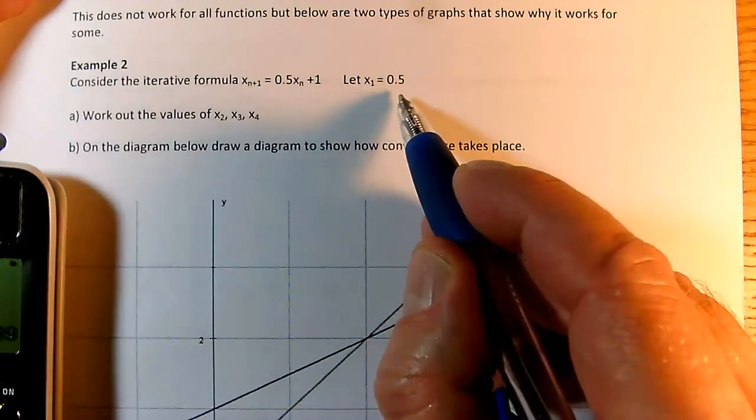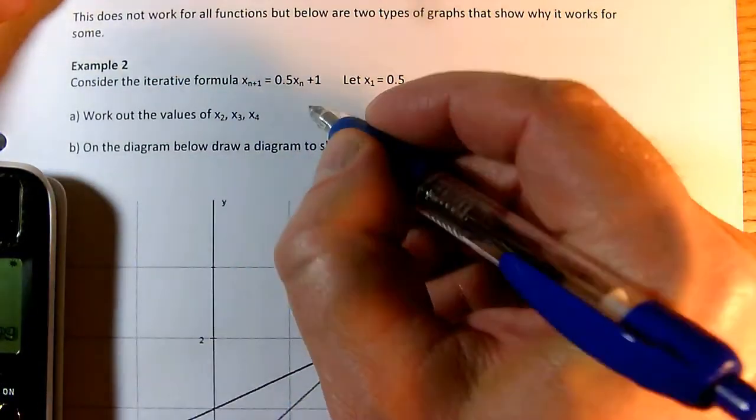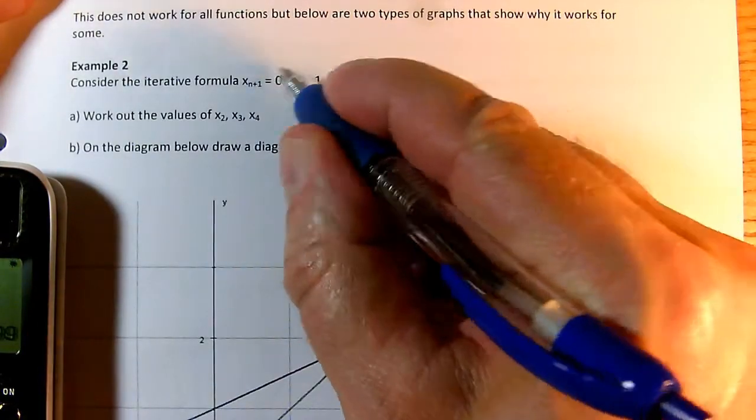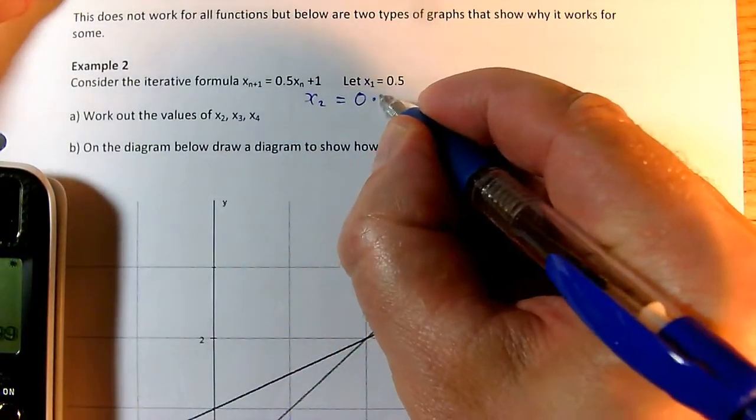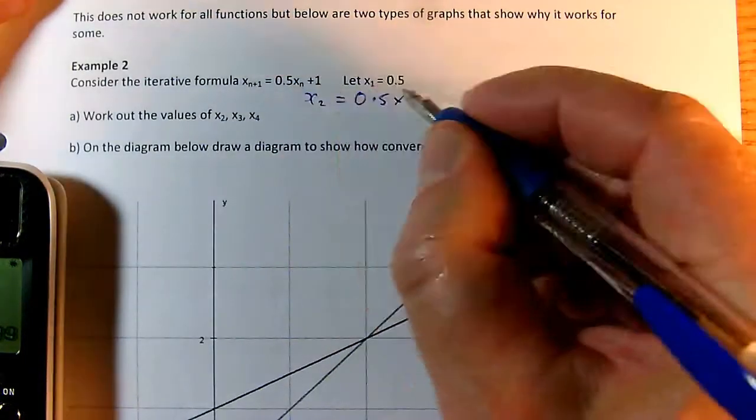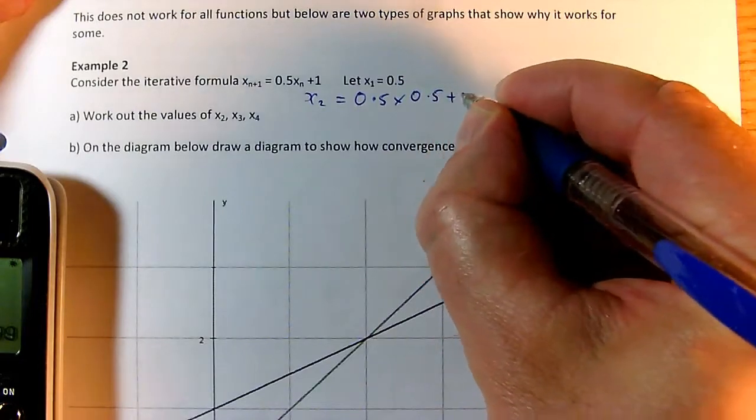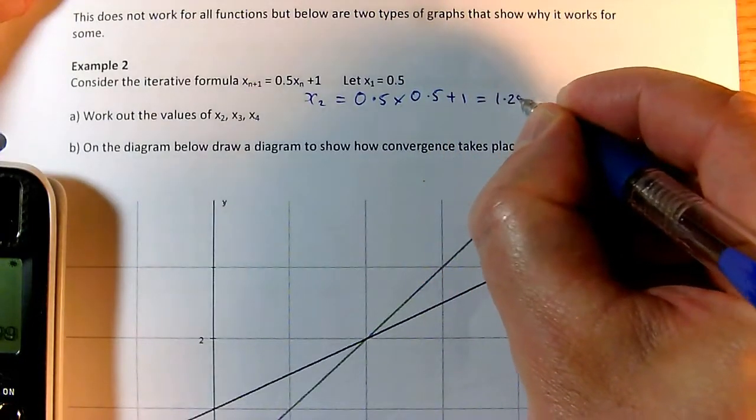To get started, we've got a starting value, x1. So to work out x2, we just have to substitute x1 into the formula in this term here. So, 0.5 times xn, I'm going to take that to be my first term. So, 0.5 times 0.5 plus 1, which is 1.25.